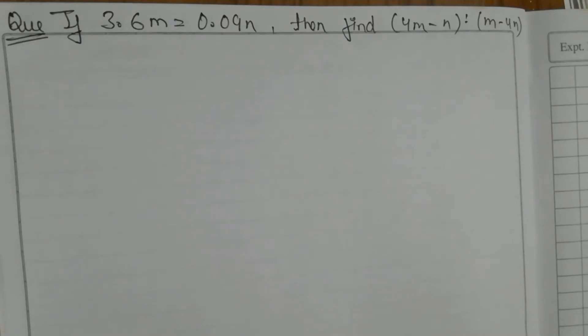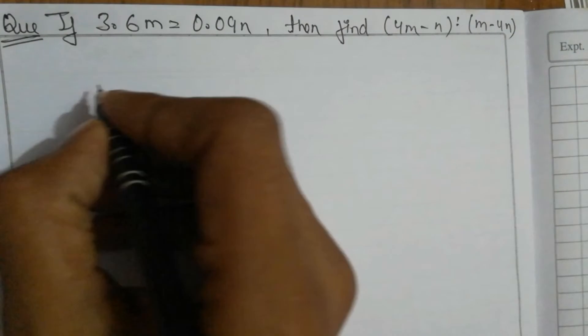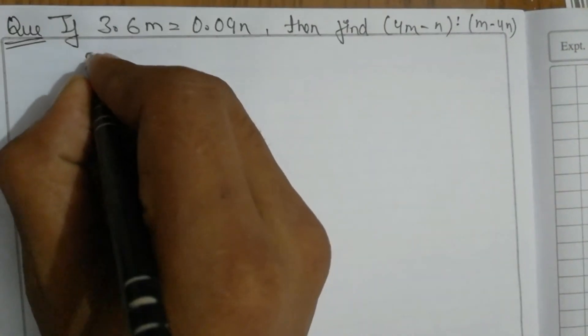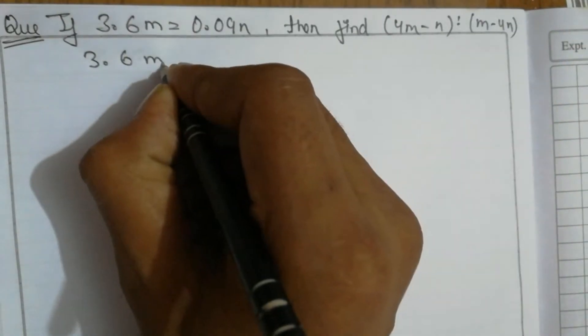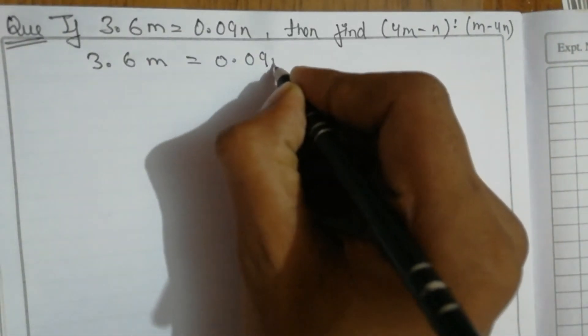Here is our first question: if 3.6m equals 0.09n, then find the value of (4m - n) raised to (m - 4n). So first we take 3.6m equals 0.09n.